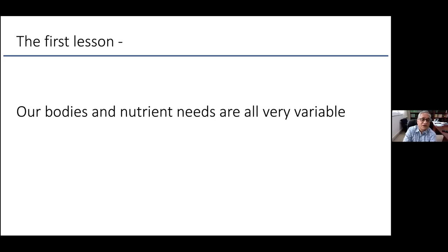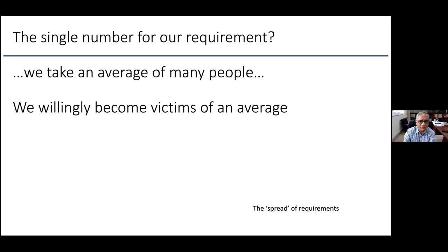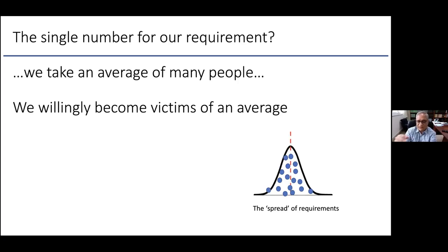The first lesson is that our bodies and our nutrient needs are all very variable — terribly variable — yet a dietitian will tell you all to eat the same amount of food. That's spectacularly wrong. How can we have faith in these numbers? What dietitians and doctors do is take an average: they measure healthy people's requirements, plot a bell-shaped curve around that, take the average, and say that's what you should eat. We willingly become victims of an average.